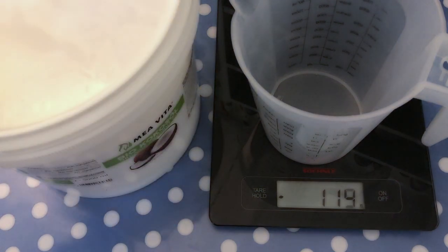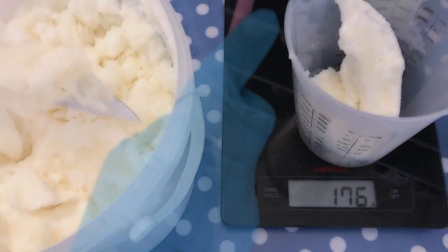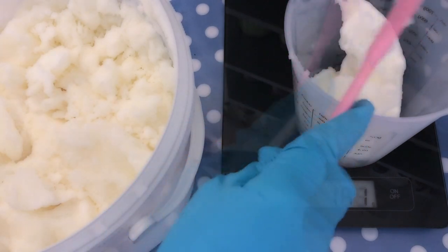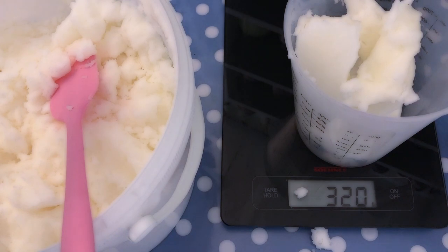Now we are going to weigh out our coconut oil, which is our fat part of the soap. Coconut oil is ideal because it has very cleansing properties and therefore perfect for laundry.